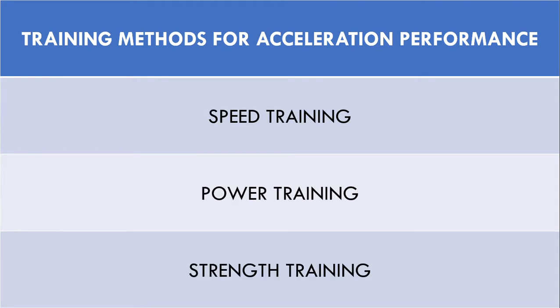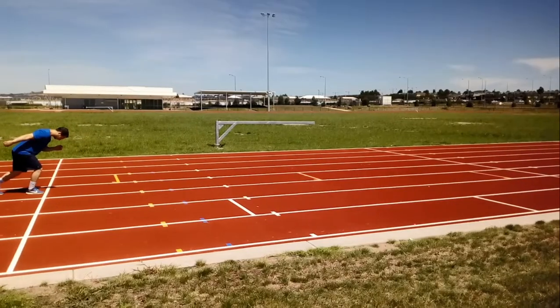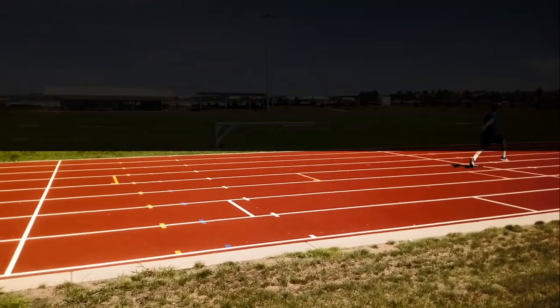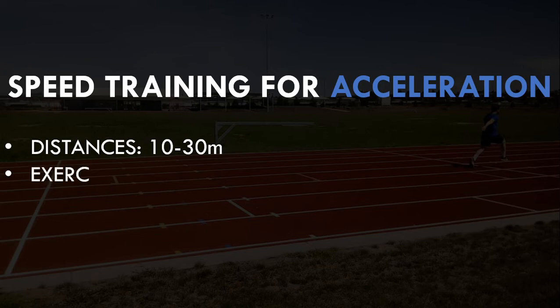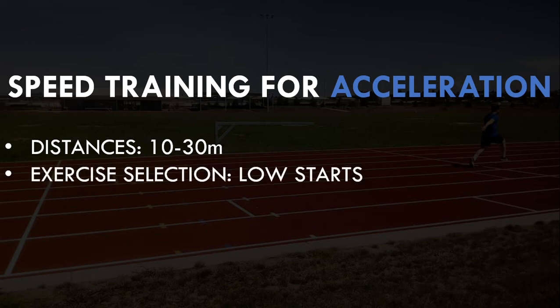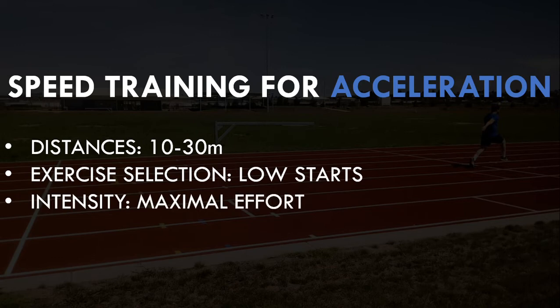The first training method is specific speed training — we need to actually practice the skill we are trying to improve. To focus specifically on acceleration development, it is best to use short distances of around 10 to 30 meters, as the acceleration mechanics will be most emphasized during the early portion of a sprint. Any low starts will be good options, such as push-up starts, two-point starts, block starts, and falling starts, which put the athlete into a forward leaning position. These sprints should be performed with maximal intent and given enough rest to fully recover between efforts.